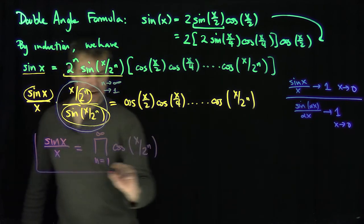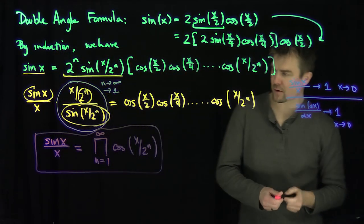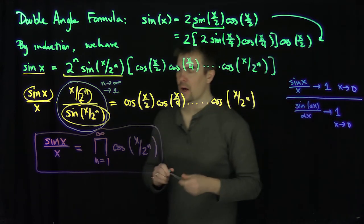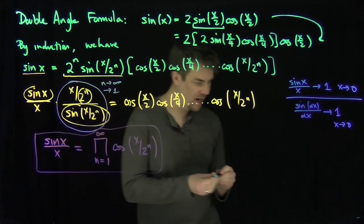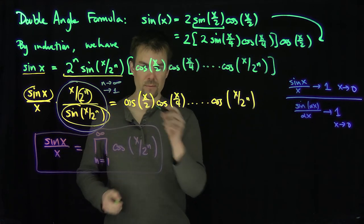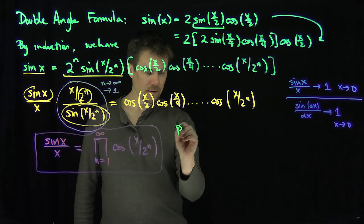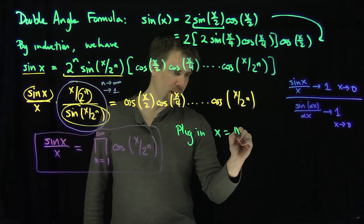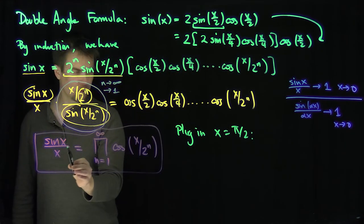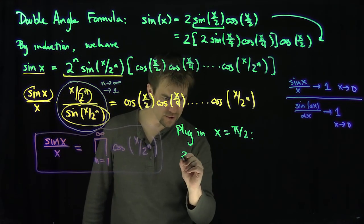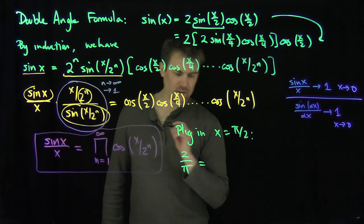That's an infinite product representation for sine of x over x, and now I promise we get a relationship for pi. Let's plug in x equals pi over 2 into this formula. The sine of pi over 2 is equal to 1, so the left-hand side becomes 1 over pi over 2, which is 2 over pi. Therefore, 2 over pi equals the infinite product of all the cosine terms.